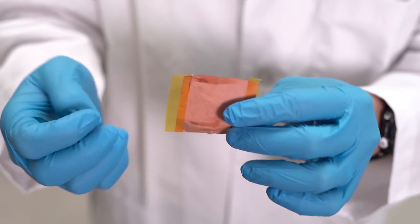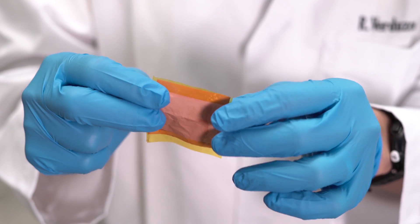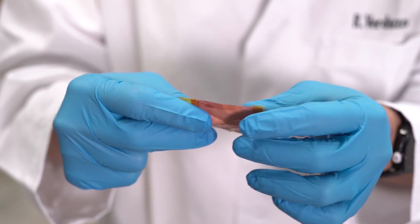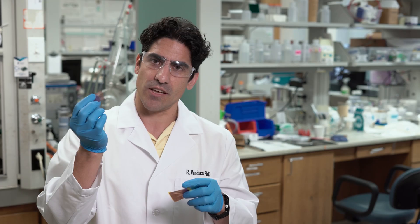This is another example of a photovoltaic device on a very light, flexible substrate. If you can fabricate solar cells on a surface like this, you can almost put them anywhere.